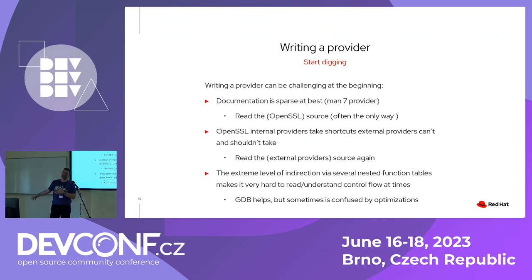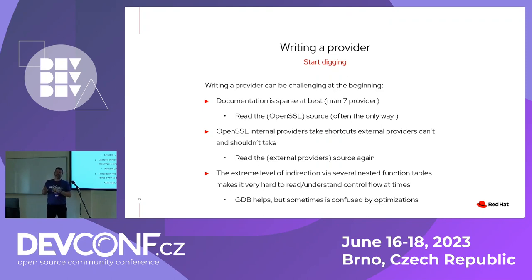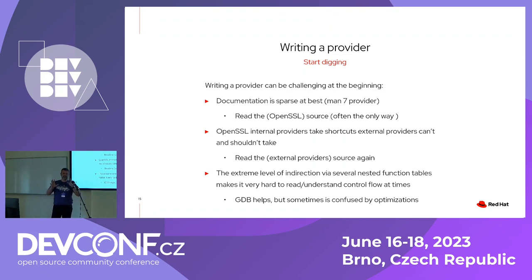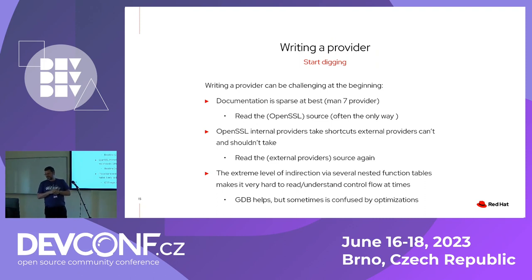Sometimes reading the source code leaves you more confused than not reading it. When that happens, I shell out GDB, set breakpoints, and see what happens — do backtraces and then go back to find functions with a better understanding of where things come from and go. Sometimes GDB also gets confused because of the extreme level of macro indirection. It's fun in a way — sometimes you swear a little bit, but in the end it works.